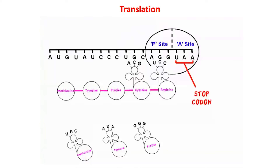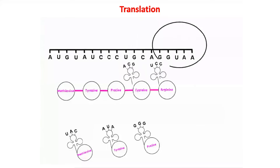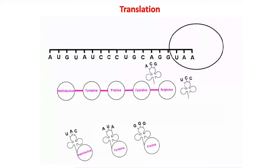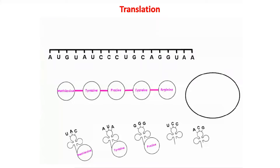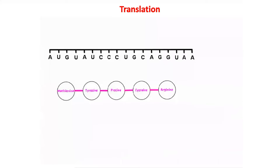The stop codon does not code for an amino acid but indicates where translation ends. Once terminated, the polypeptide chain, tRNA, ribosome, and mRNA detach, and the polypeptide chain becomes free-floating in the cytoplasm. Thus in translation overall, the mRNA is used to form a polypeptide chain.